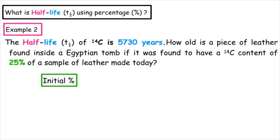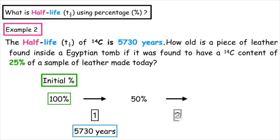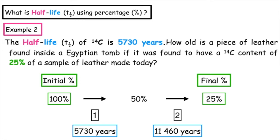The initial percentage is always going to be 100%. Half of 100%, that's one half-life, is a total of 5,730 years, which would give us a remaining total of 50%. If this undergoes a second half-life, that will give us a total of 11,460 years, which will give us our final percentage of 25%. So the answer is 11,460 years.